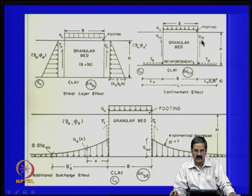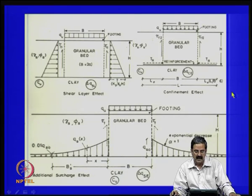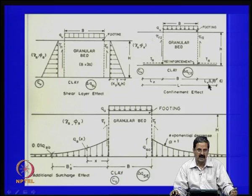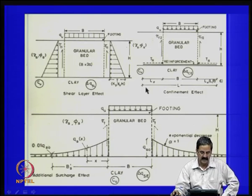There is another term T_f2 — shear resistance that gets mobilized at the failure plane. Apart from these two, the length of the reinforcement is L and the effective length is L_e, which can be 2.5 to 3 times B. This leads to a confinement effect. When both these effects are acting together, they act like a surcharge effect.